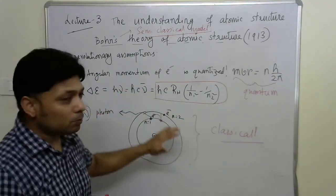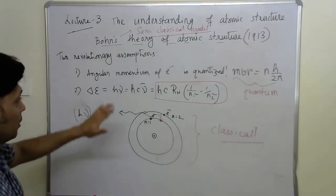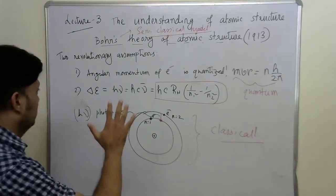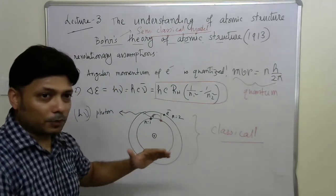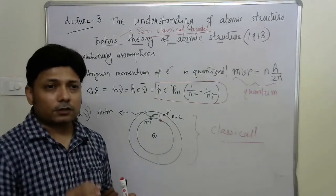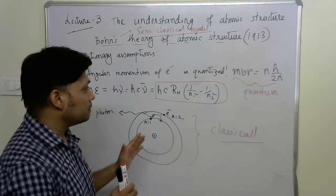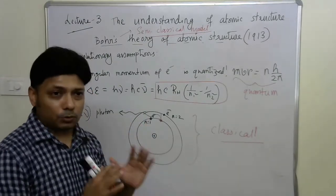That means, that value also theoretically proved from Niels Bohr's theory. At this point, we are not going into that much details of the Bohr's theoretical treatment. But, the bottom line is, using quantum mechanical assumptions, Niels Bohr for the first time satisfactorily shed light on the atomic structure and he could explain many things that were mystery up to that time.